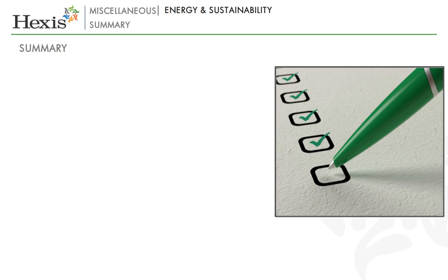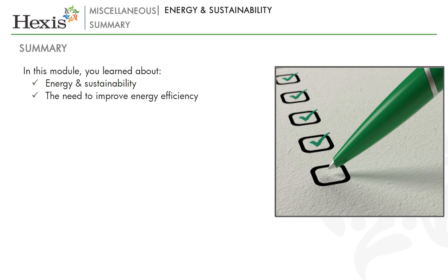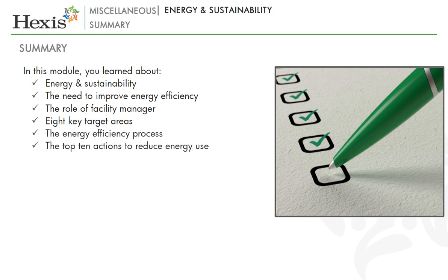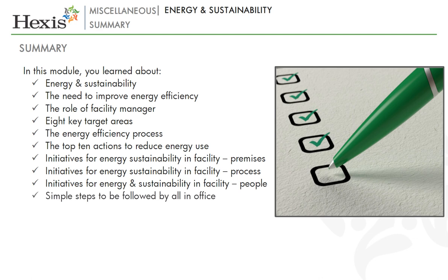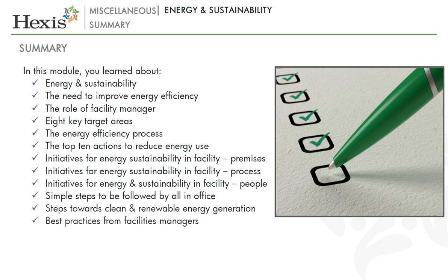That brings us to the end of this module on Energy and Sustainability. In this module we looked at: Energy and Sustainability; the need to improve energy efficiency; the role of facility manager; 8 key target areas; the energy efficiency process; the top 10 actions to reduce energy use; initiatives for energy sustainability in facility premises, process, and people; simple steps to be followed by all in office; steps towards clean and renewable energy generation; best practices from facilities managers; impact on business; and Indian agencies and green buildings.